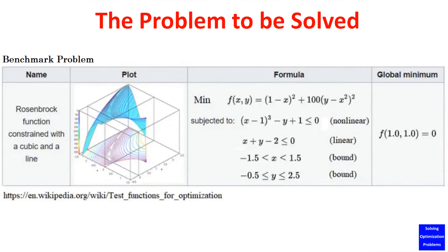Here are the details of the constrained optimization problem to be solved in this video. As we can see, this is a minimization optimization problem with two constraints — one constraint is non-linear and another one is linear. In addition, the proven global optimal solution is shown here and will be used as our benchmark to test our Particle Swarm Optimization algorithm.